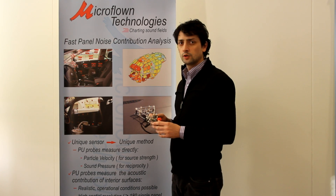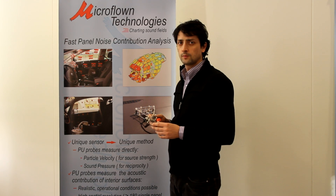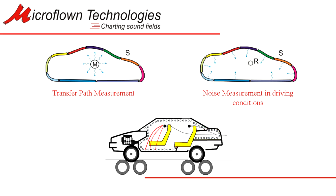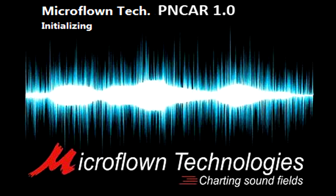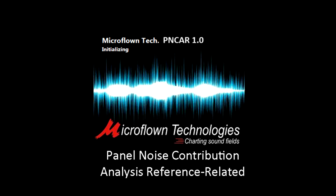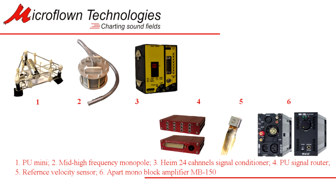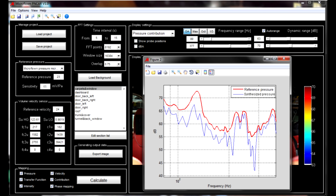With this method it was not possible to perform measurements under driving conditions. With the acoustic camera, it is possible to perform the panel noise contribution in real driving conditions. Inside the car, high velocity at the surface does not necessarily mean a high pressure perceived at the driver's ear, because the pressure depends on the relative panel phase and the transfer path. The add-on for the acoustic camera called PNCIR — Panel Noise Contribution Analysis Reference Related — uses the same hardware of the acoustic camera to perform airborne transfer path analysis. Combining together the measurements at the surface of the car interior and all the transfer functions, it is possible to synthesize the pressure at the driver's ear position.